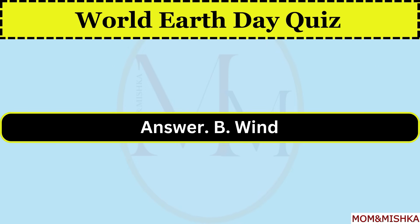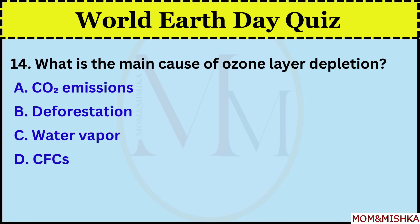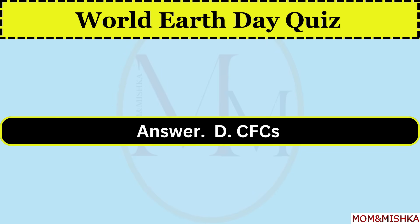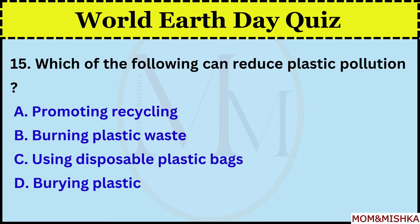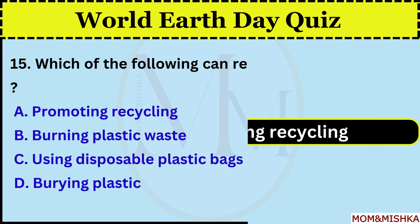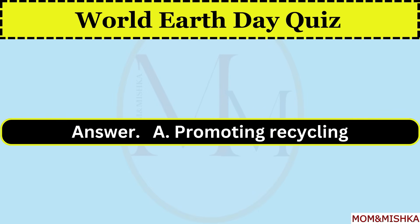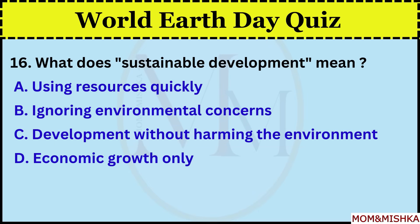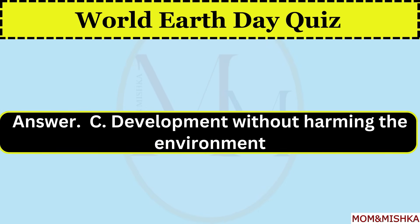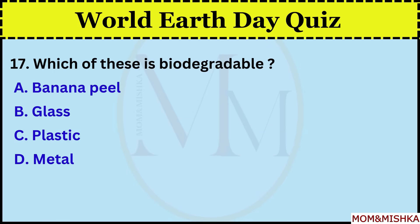Which of the following is a renewable resource? Wind, option B. What is the main cause of ozone layer depletion? Chlorofluorocarbons (CFCs), option D. Which of the following can reduce plastic pollution? Promoting recycling, option A. What does sustainable development mean? It means development without harming the environment, option C.